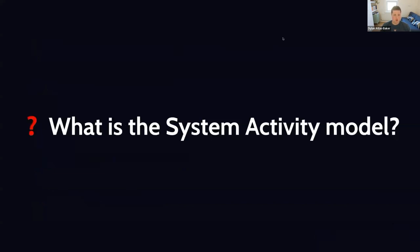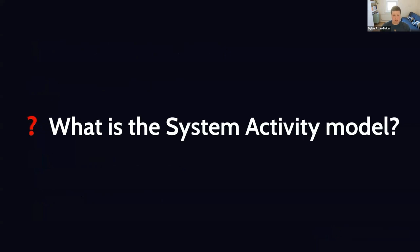So let's jump into what is the system activity model. The system activity model is just an internal LookML model — it's one where you don't see the code, but it is like any model that has a bunch of explorers in it that you would define in your own LookML code, in your own LookML projects. It is a bunch of explorers — there are 20 currently — that ship by default with Looker. You can use them to analyze different things about your own Looker instance. They're effectively pointing to what you can think of as the production database that is running your Looker instance.